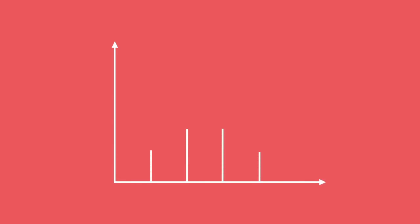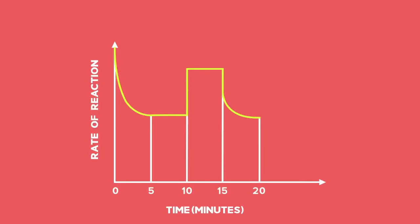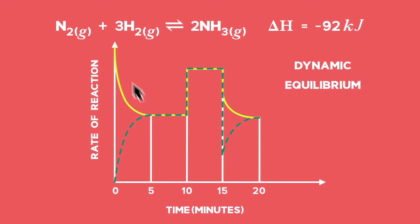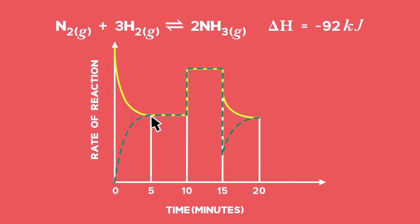If we look at a rate versus time graph for the Haber process, we can interpret the various changes that have affected the chemical equilibrium. Given the equation where nitrogen and hydrogen makes NH₃, note that you will need to learn the equation and the fact that the forward reaction is exothermic. At 5 minutes, the system has reached dynamic equilibrium — we can see this by the forward and reverse reactions occurring at the same rate, meaning the line is parallel to the time axis. At 10 minutes, both the forward and reverse reaction rates have increased by the same amount. This shape on the graph is an indication that a catalyst has been added.